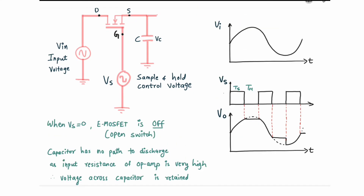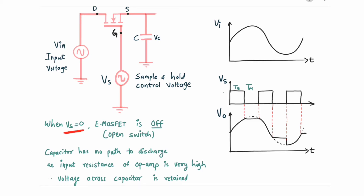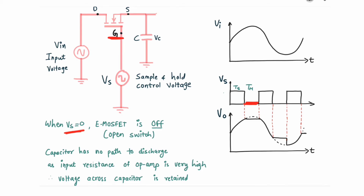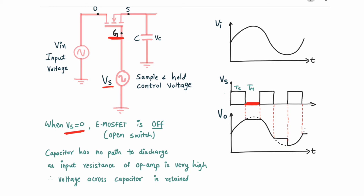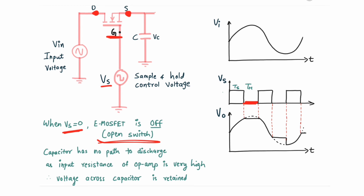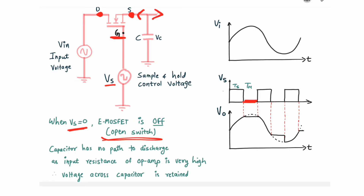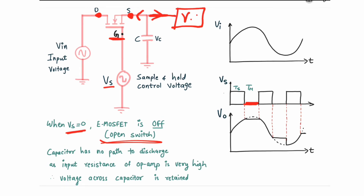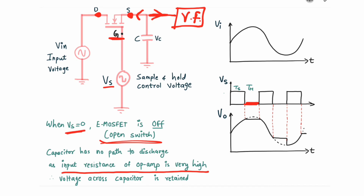Now what happens when Vs equals zero is important. When the controlling voltage is zero, the gate terminal gets no input, so the E-MOSFET stops conducting and turns off — it acts as an open switch. This path is now disconnected. The capacitor now has no path to discharge: it cannot go through the open MOSFET side, and on the other side we have the voltage follower whose input resistance is very high, so it cannot discharge through the op-amp either.